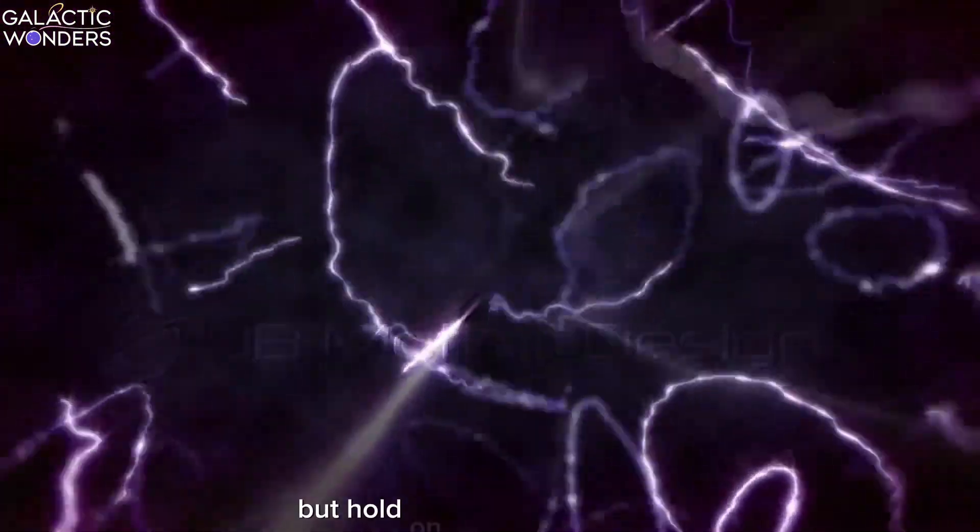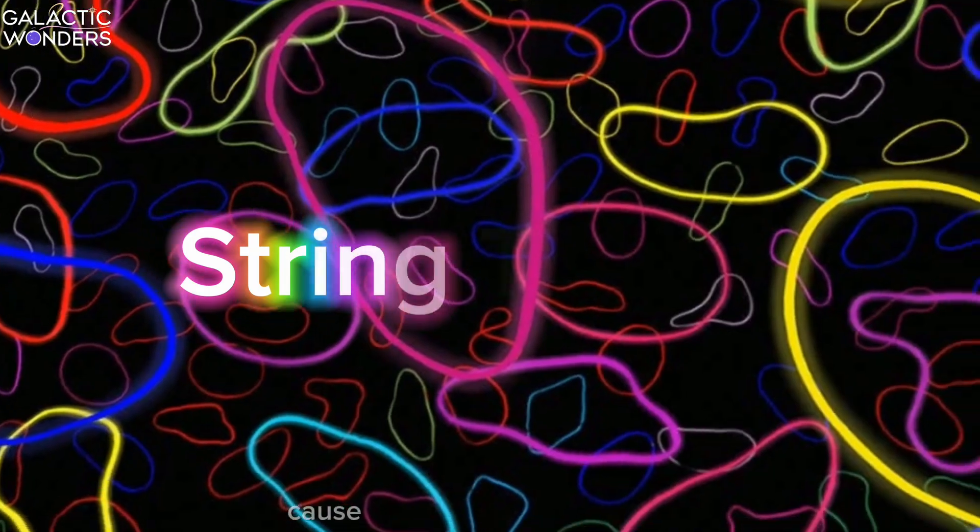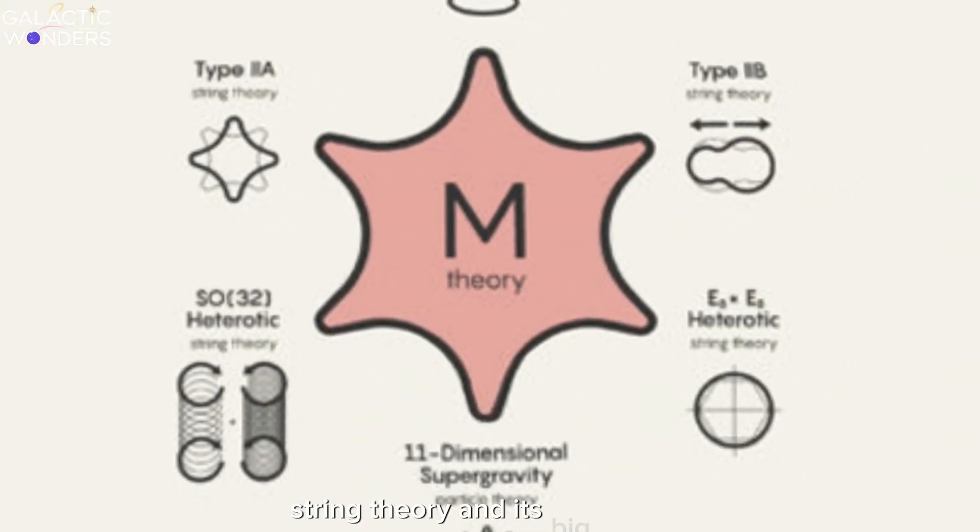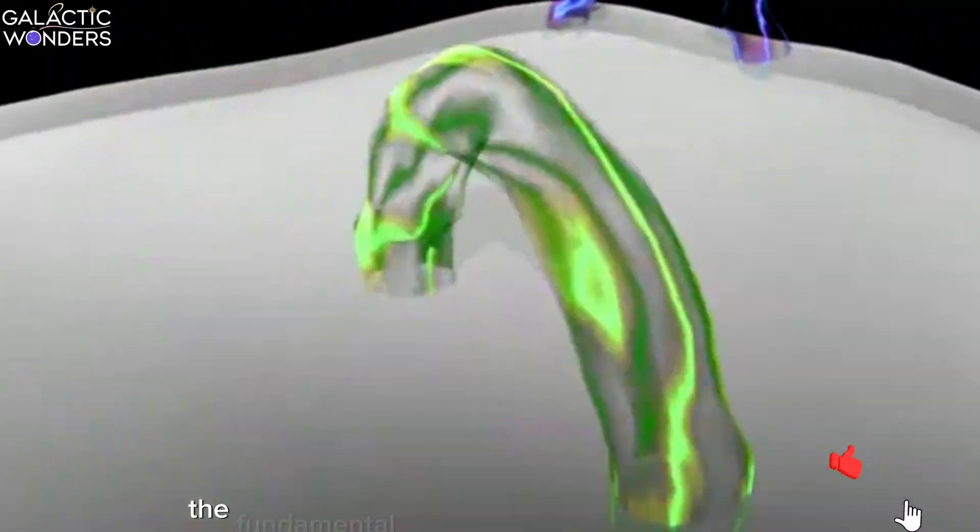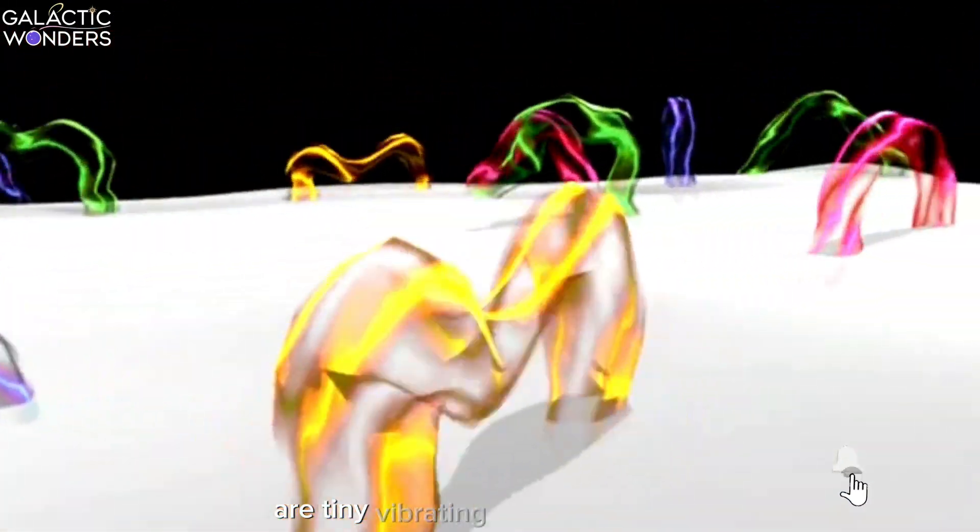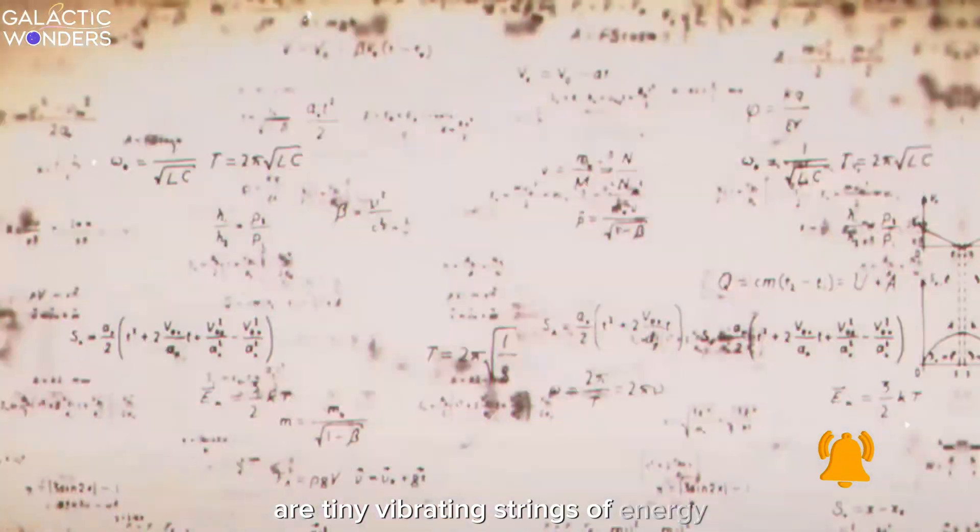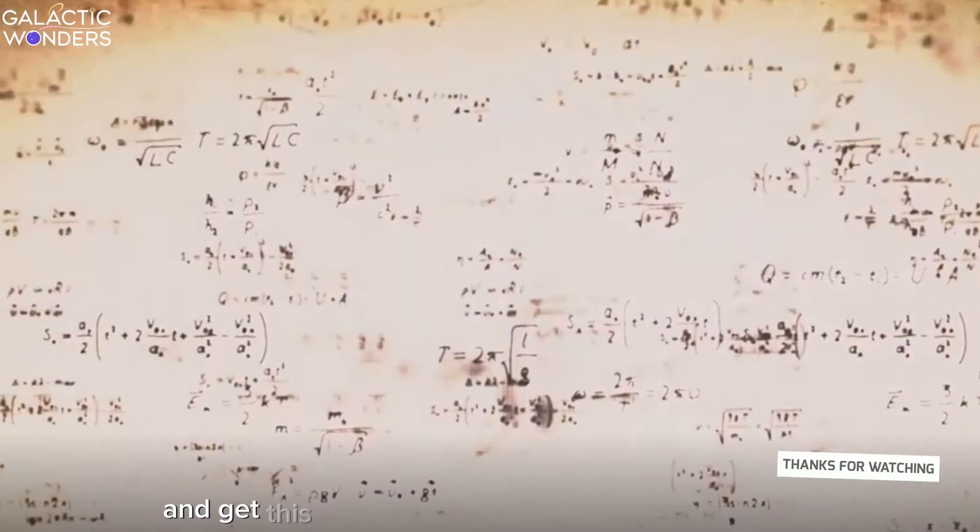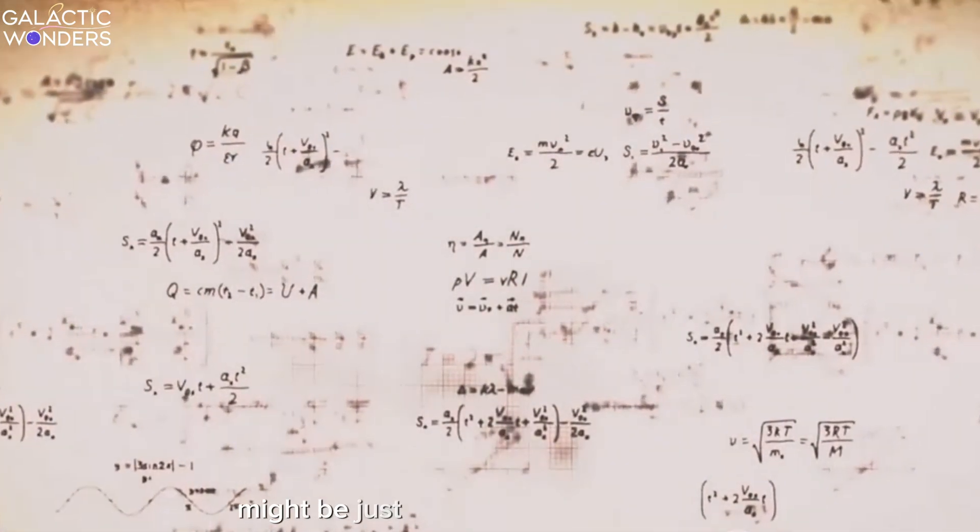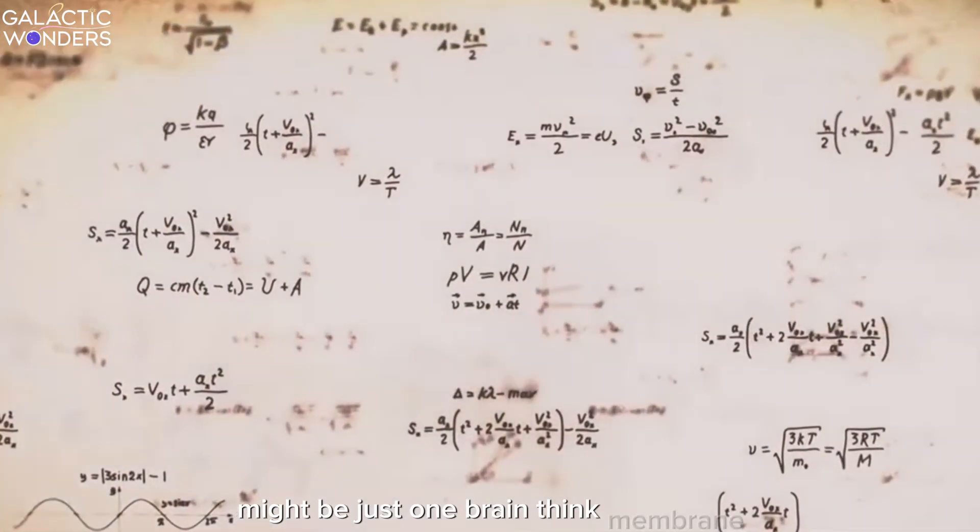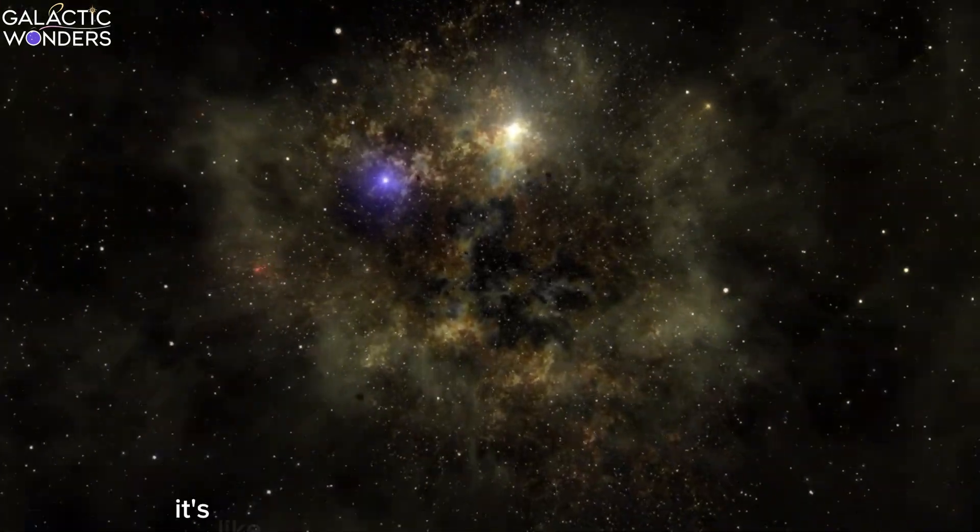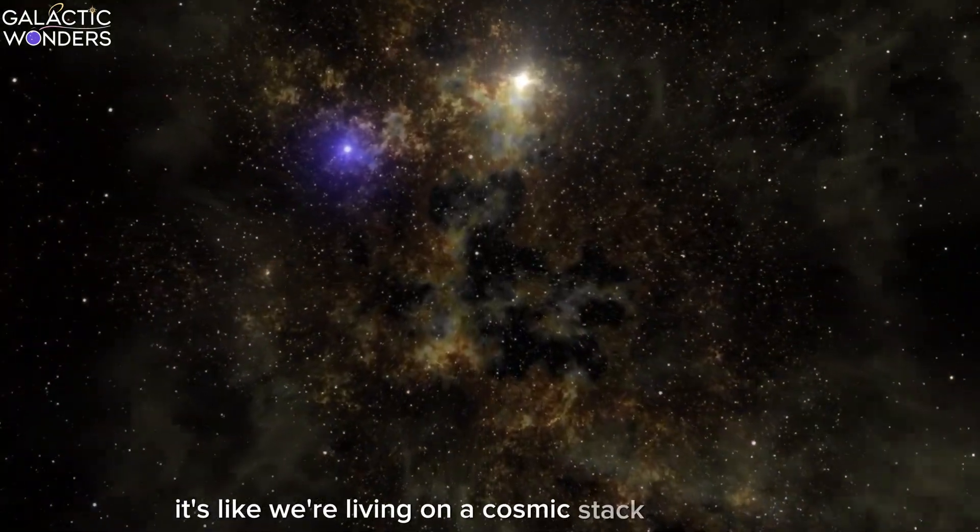But hold on to your calculators, cause we're about to get stringy. String theory and its big brother, M-theory, suggest that the fundamental building blocks of our universe are tiny, vibrating strings of energy. And get this. These theories predict that our universe might be just one brane, think membrane, floating in a higher dimensional space. It's like we're living on a cosmic stack of pancakes.